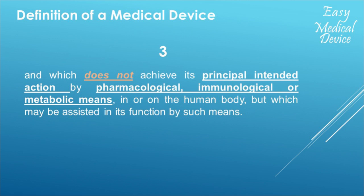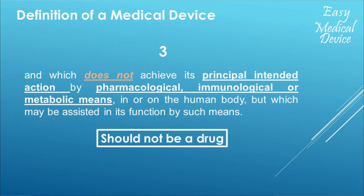We are now at the third part of the definition. Let's read it together: 'which should not achieve its principal intended action by pharmacological, immunological or metabolic means in or on the human body, but which may be assisted in its function by such means.' How can I reduce this? For me, it should not be a drug. If it has no pharmacological, immunological or metabolic means, it's not acting on the body like a drug — so: should not be a drug.